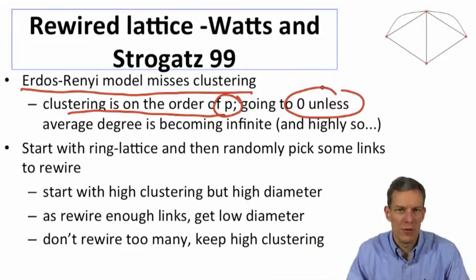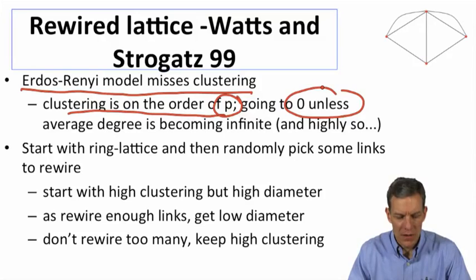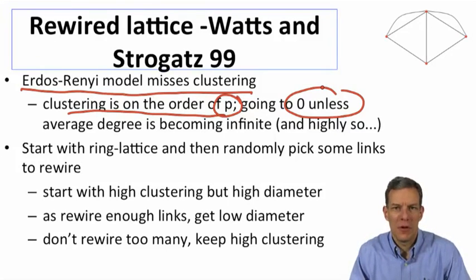We have hundreds or thousands of neighbors. So the idea is that we need to have something which captures the high clustering and yet has a small p.